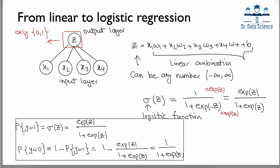Looking closely at this in terms of probabilities: we have two discrete labels. The probability that y equals one is equal to the sigmoid of z, which is e^z over (1 plus e^z). The probability that y equals zero is one minus that, which gives 1 over (1 plus e^z). Adding these two probabilities gives (1 plus e^z) divided by (1 plus e^z), which equals one. That's how logistic regression works for a two-class problem.